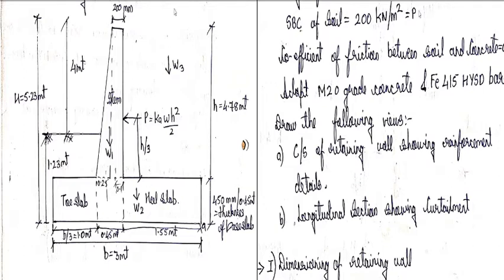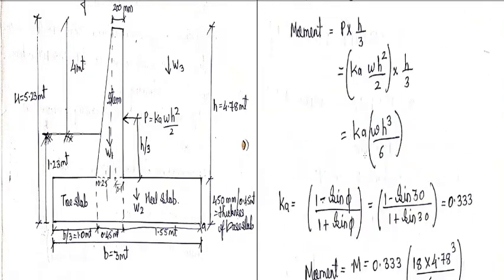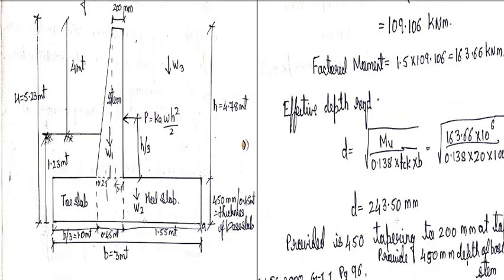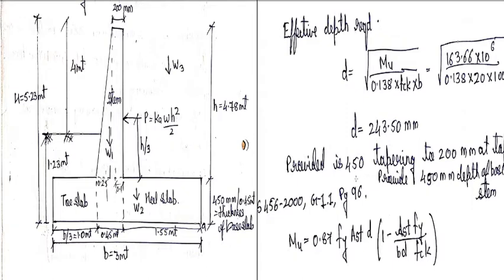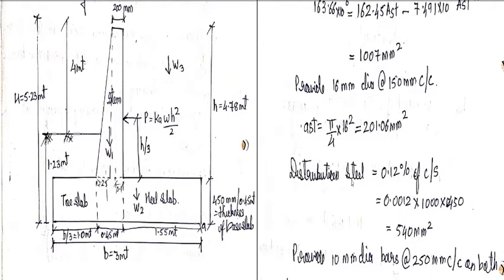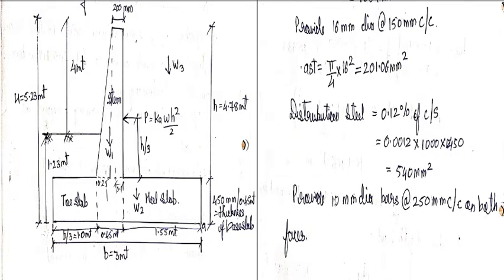This is the cross section of the cantilever beam. The stem portion has a top width of 200 mm and a bottom width of 450 mm as a tapering section. Initially we dimensioned this, then the design of stem took place. We calculated the moment, which came to 163.66, and computed the dimension as 243.5. We provided a tapering section of 450 mm at the bottom tapering to 200 mm at the top. Reinforcement was computed according to IS 456, clause G1.1, page 96.